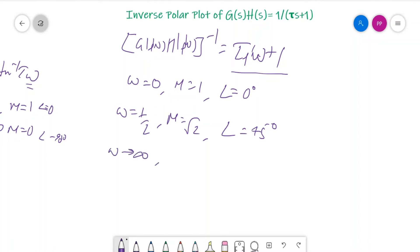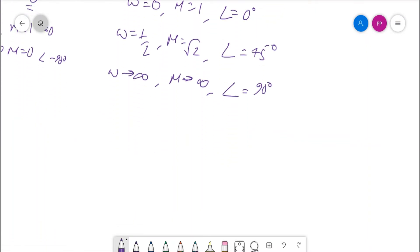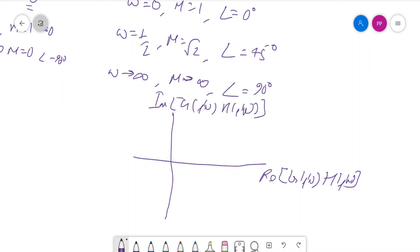If the frequency increases to ω equals 1/τ, magnitude becomes √2 and phase becomes 45 degrees. This is all in the first quadrant of the polar plot. When ω tends to infinity, we can say that magnitude tends to infinity and angle is almost 90 degrees because the real part would be negligible in that case. Let us plot the polar plot for this. You have the real part of G(jω)H(jω) and the imaginary part of G(jω)H(jω).